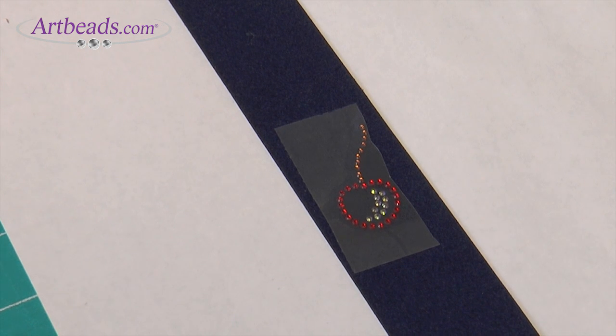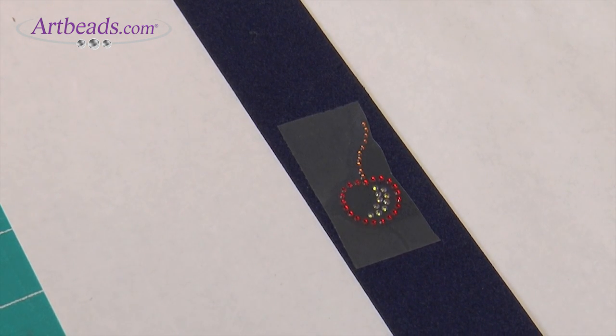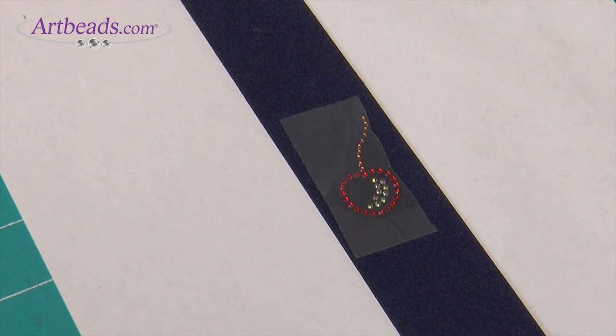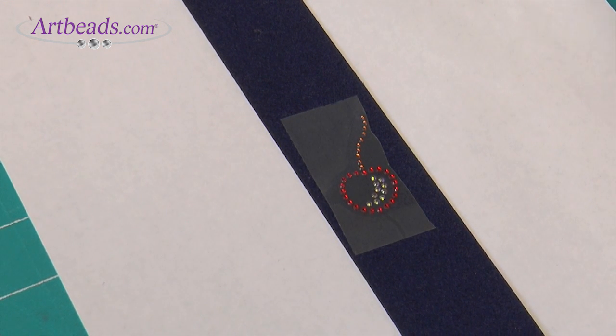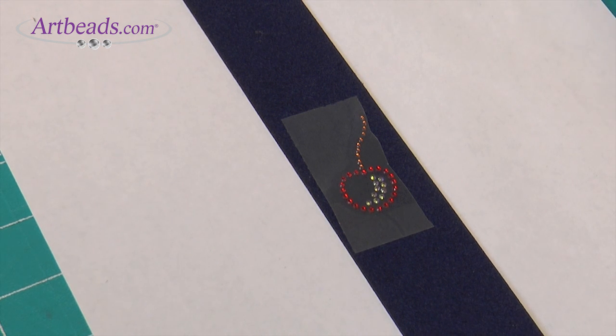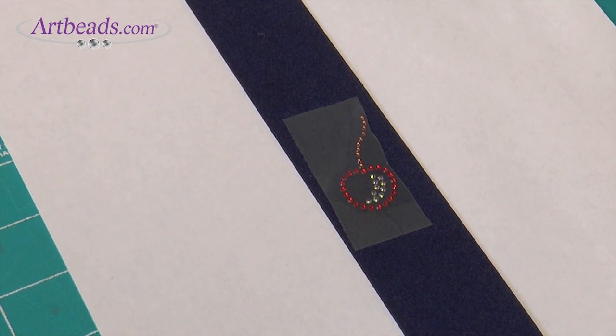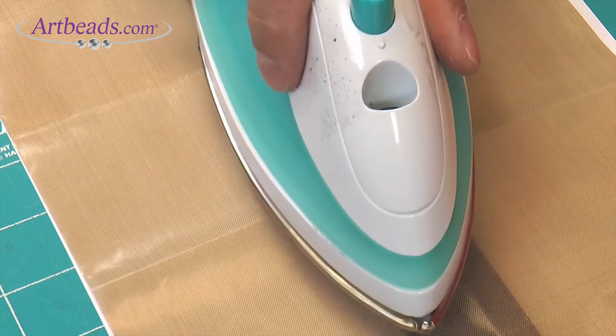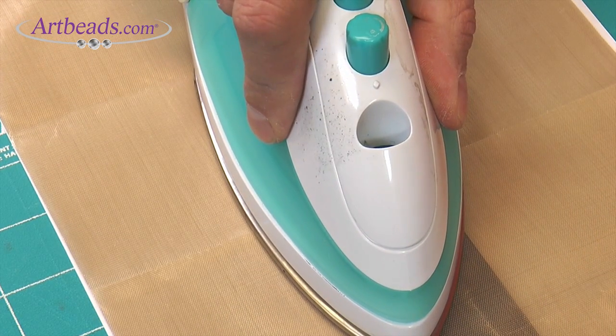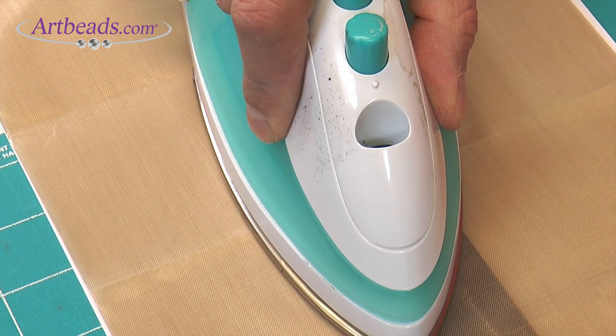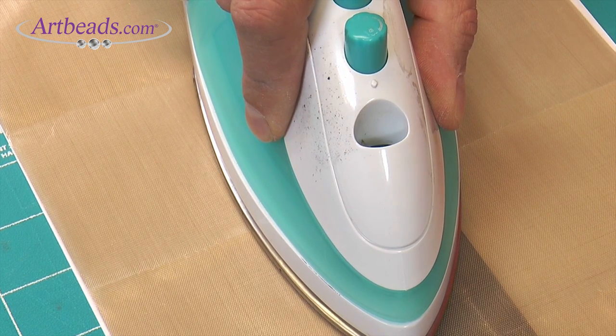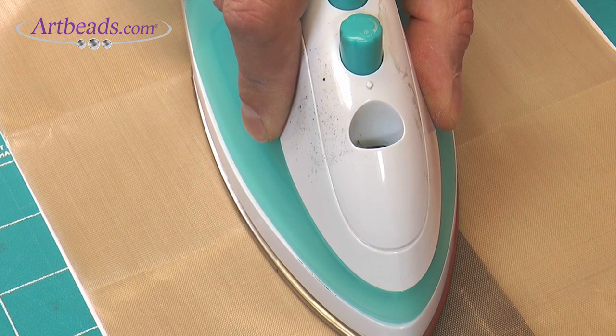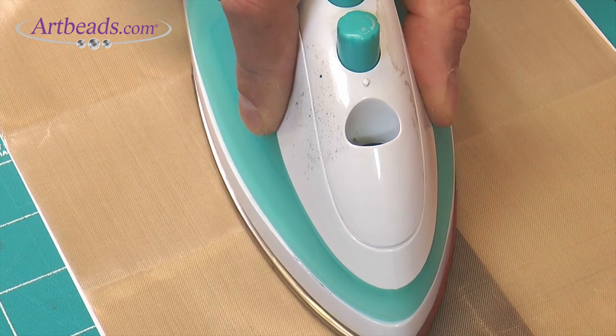What the Teflon paper does is it actually protects the transfer so if any glue was to ever ooze out from underneath the transfer, it wouldn't stick to the top of your iron. The iron is set at the hottest temperature setting possible with no steam. I actually don't even want any water inside of that iron. So I'm going to cover this. I'm going to come over and I'm going to place the iron on the top. So I want to start to count. It's generally about 25 to 30 seconds. So I'm going to say 15 seconds went by there. I think it will be good.